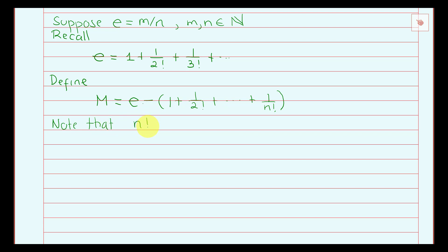Consider n factorial times e. Remember that the denominator of e is n, so if we multiply by n factorial, then n factorial times e is a positive integer. Also, if we multiply n factorial with 1 over m factorial...